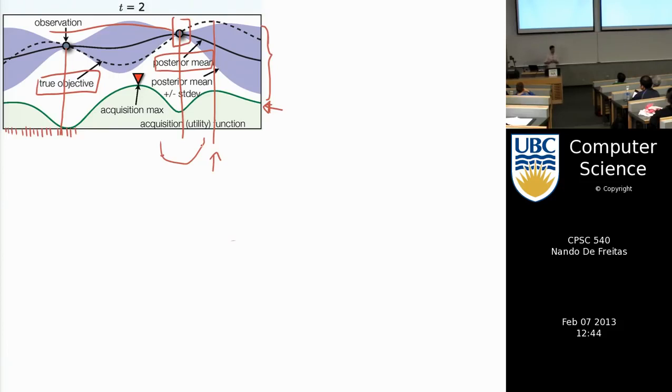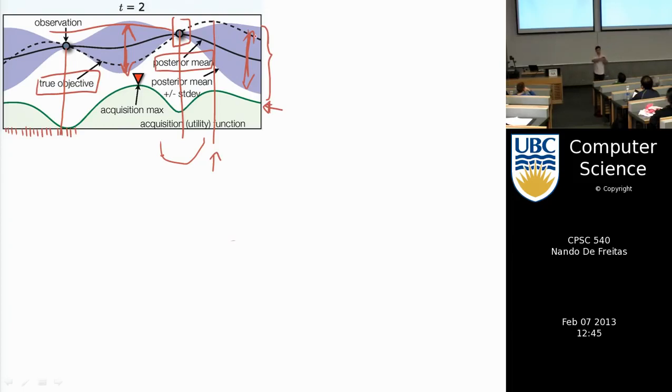That brings us back to the multi-armed bandit: how do we know whether to explore an area? That's where the confidence intervals come in. Where confidence intervals are very wide — in the middle and on the sides — that's where there's a lot of uncertainty, and where sampling would gain the most information by reducing uncertainty the most.